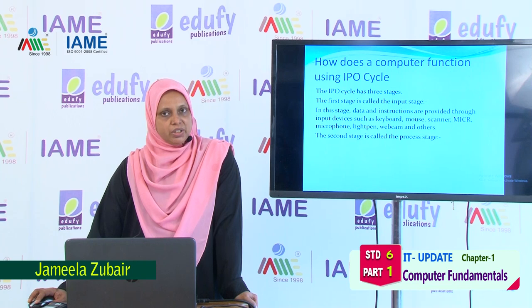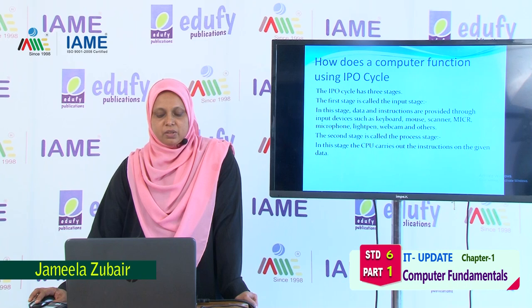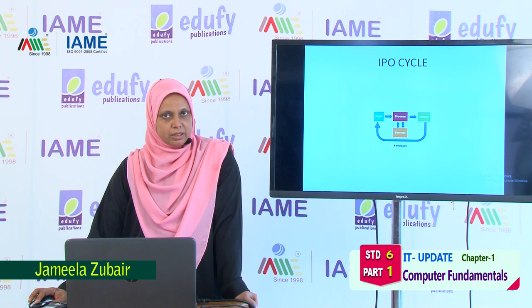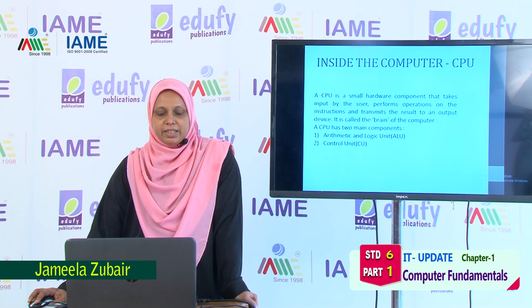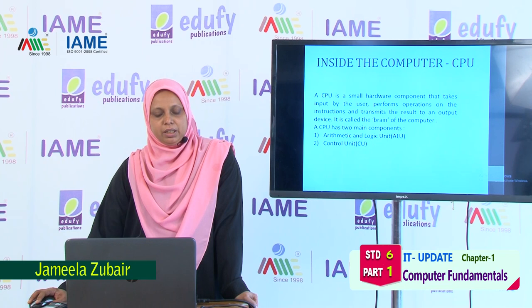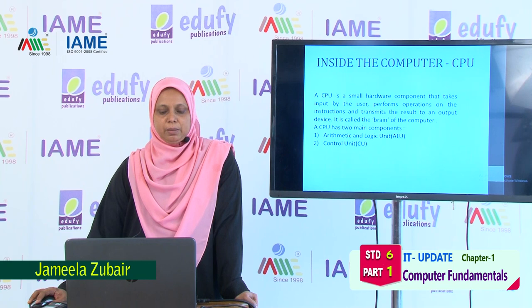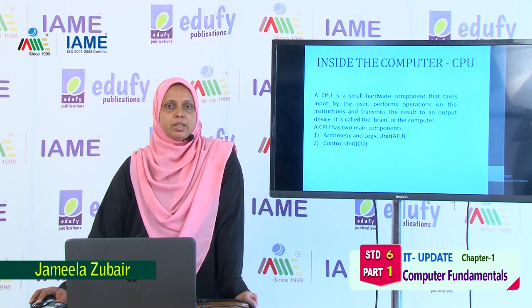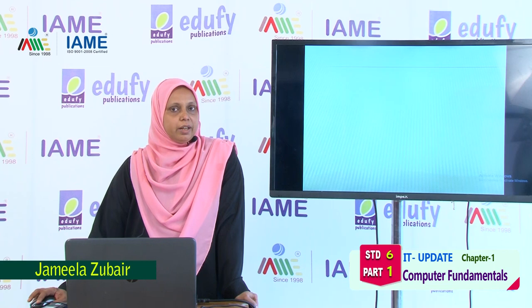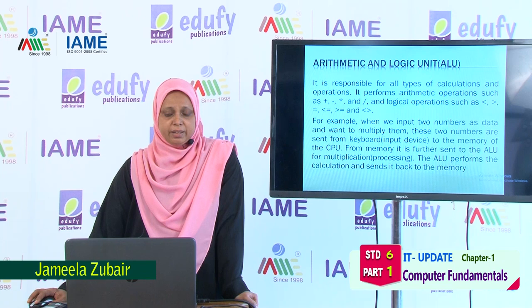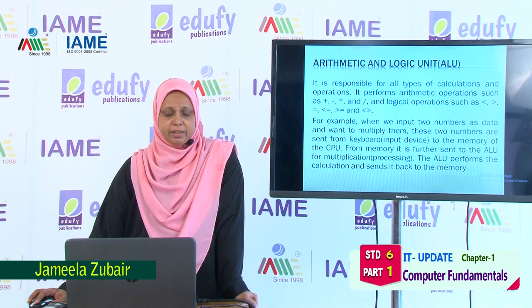In the input stage, the computer is fed data using devices like keyboard, mouse, etc. The second stage is the processing stage, and the last is the output stage, which produces the result. The CPU is a small hardware component that takes input, performs operations, and provides the result through an output device. CPU is also called the brain of the computer. It has two components: the Arithmetic and Logic Unit, which performs all arithmetical and logical calculations, and the Control Unit, which controls and guides the instructions given by us.